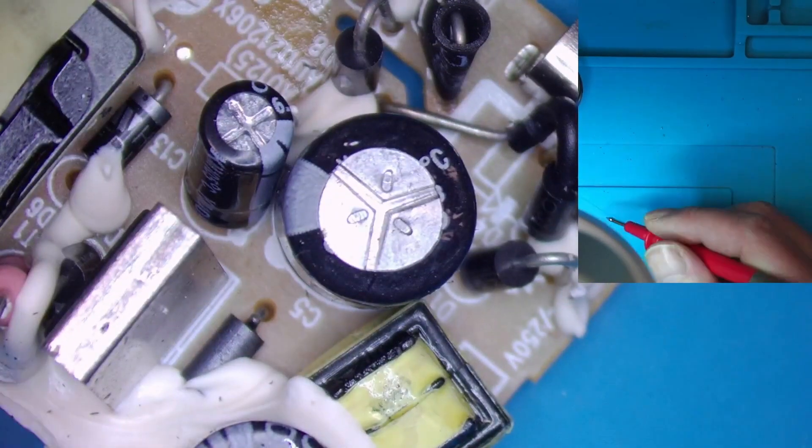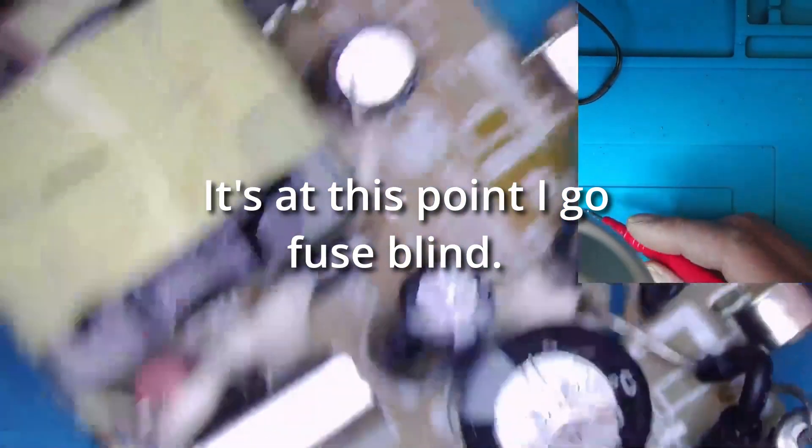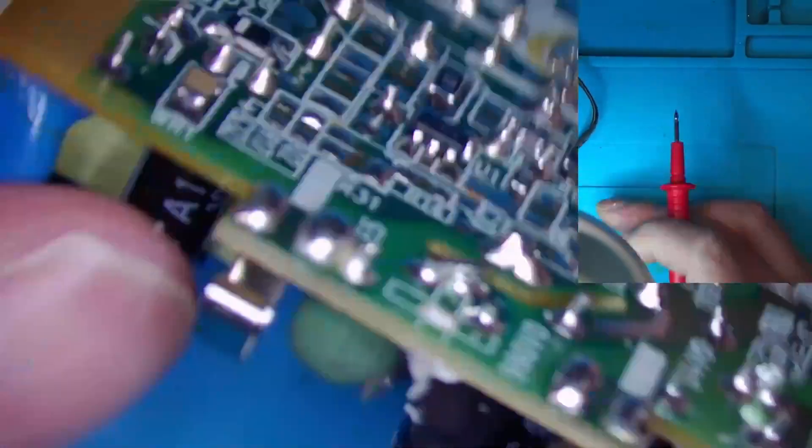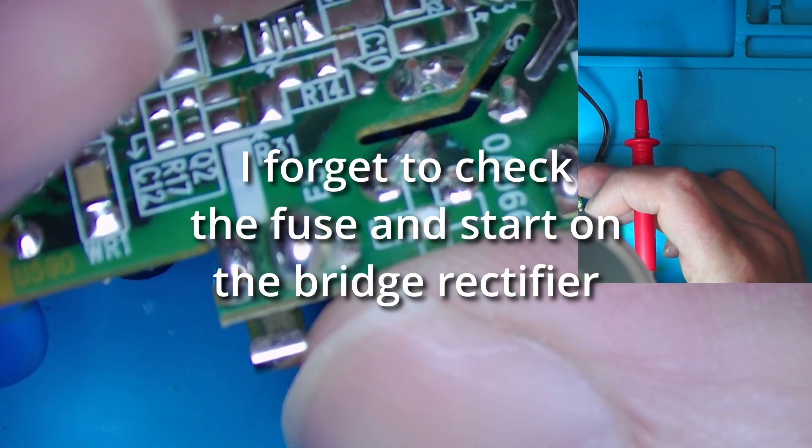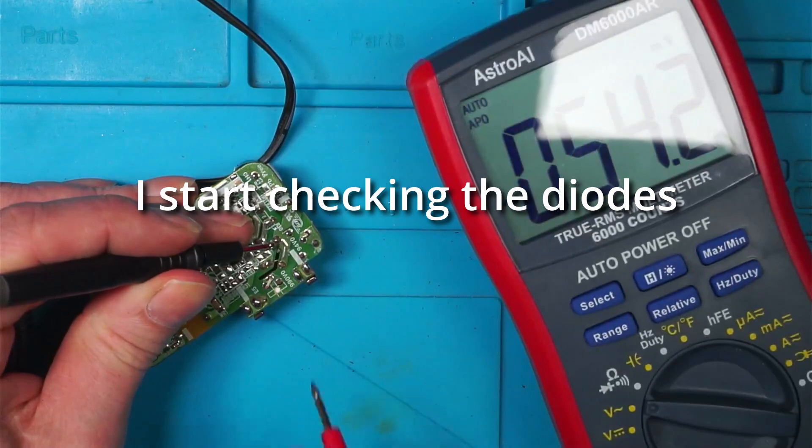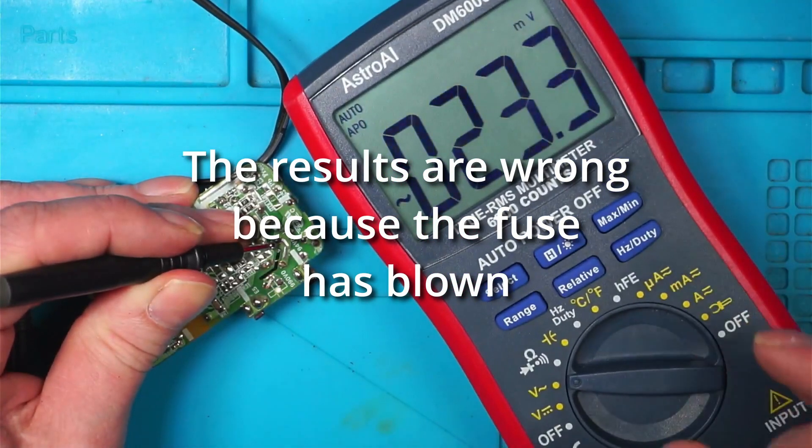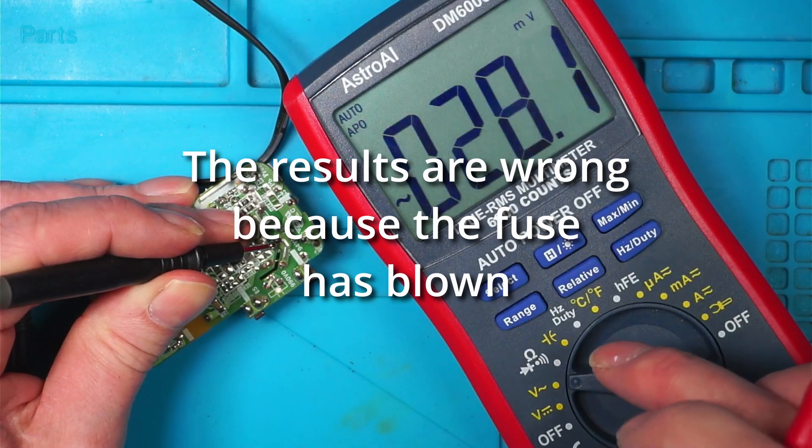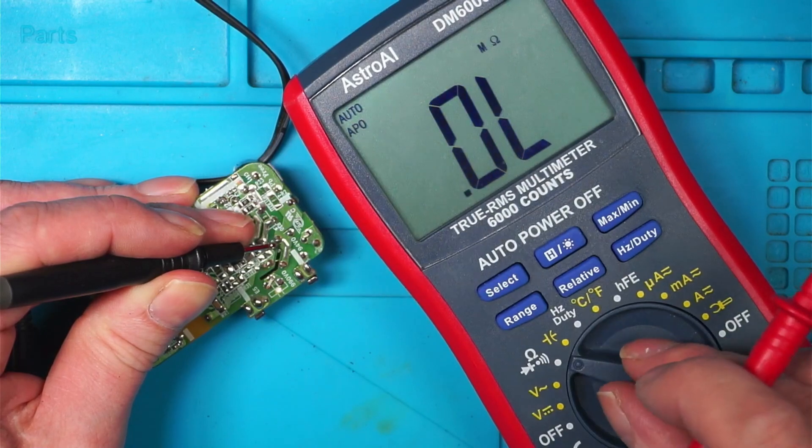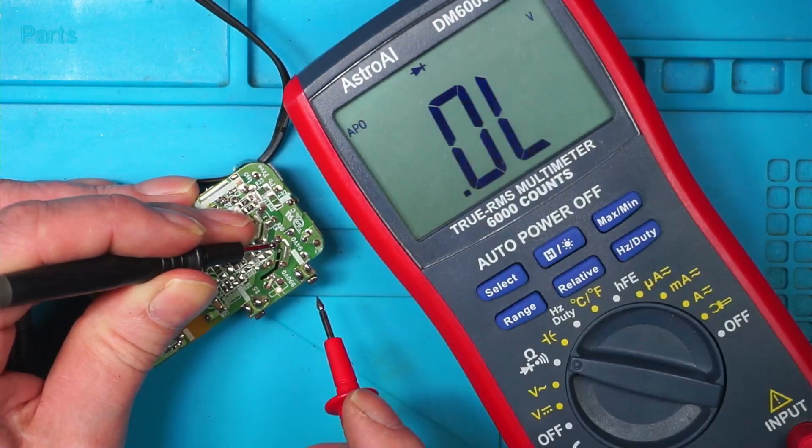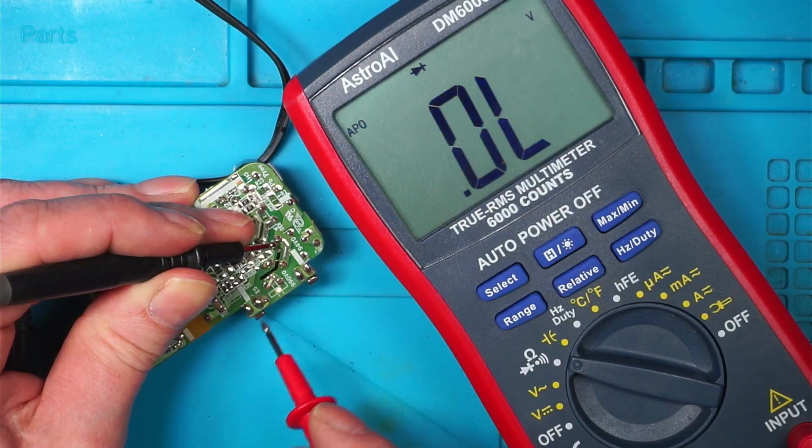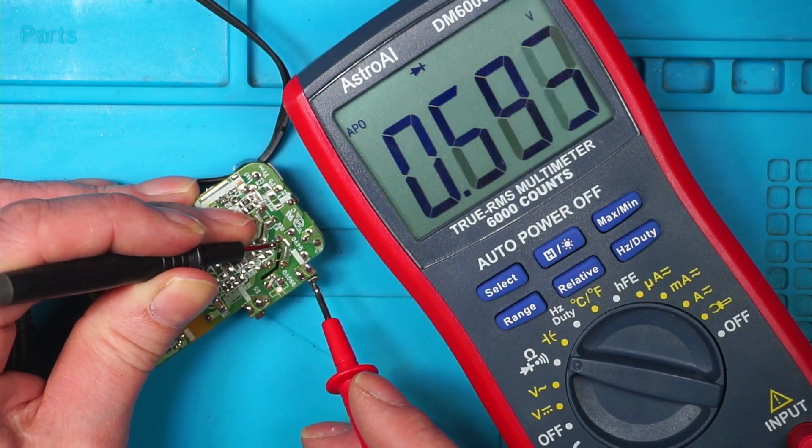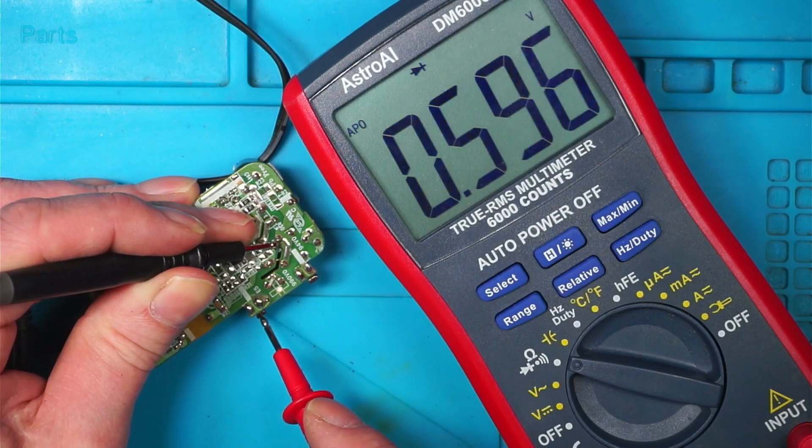Where's the fuse? Diode. If this is one leg of C5, I should be able to test the diodes by going into diode mode. And putting one leg of the multimeter on one leg of the capacitor, and one on live, on neutral, open. And I've got a diode on the other side. So one side's open, one side's got a diode.